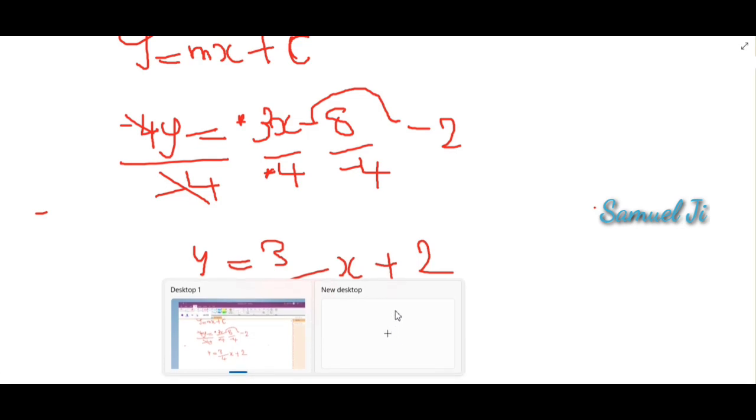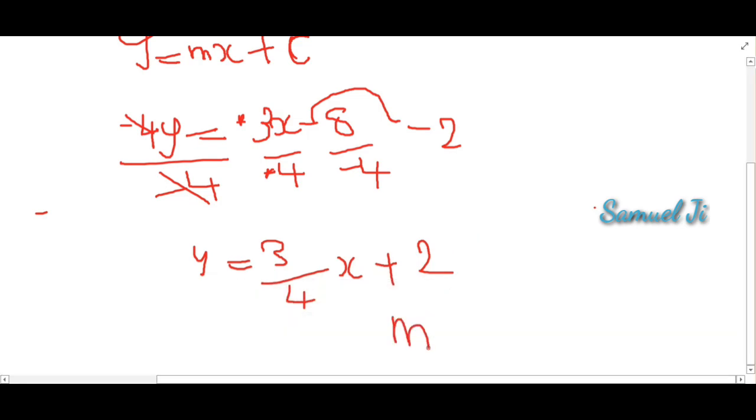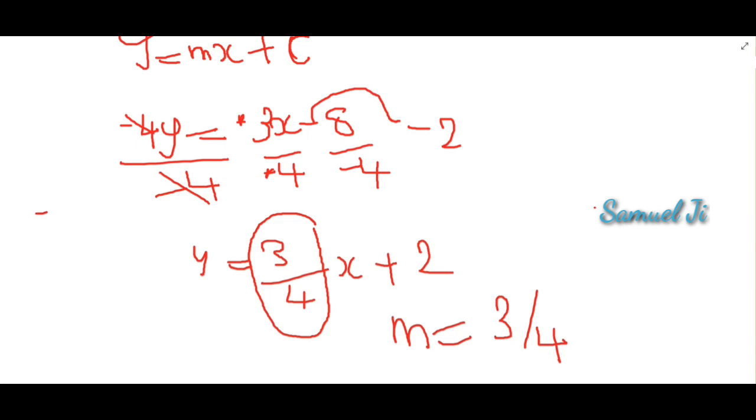So the answer is, the slope m is this thing, 3 divided by 4. So you see that, simple as that.